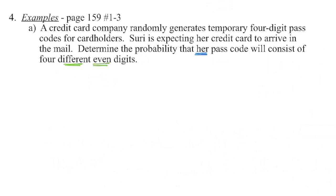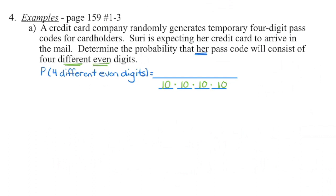Suri is expecting her credit card to arrive in the mail. Determine the probability that her passcode will consist of four different even digits. That's the criteria for her passcode specifically. I'm going to begin by setting up: we are looking for four different even digits — those are our favorable outcomes. Most people find it easier to start with the denominator.